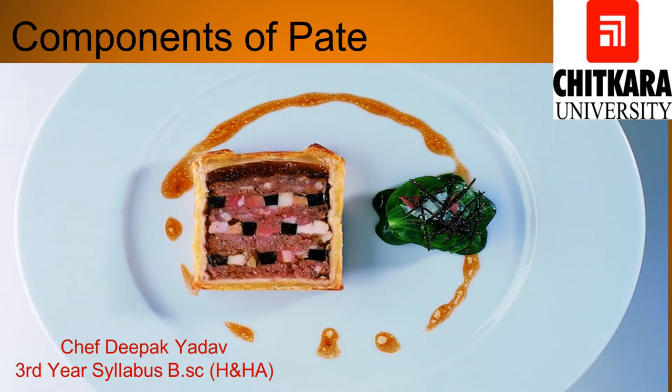A Pate therefore has a few components. The first one is Pastry. This is one of the most essential components of Pate that separates it from a Terrine. In the next episode, I will explain what a Terrine is. The second component is Stock — it is a reduced, flavored, concentrated form of meat that is used as force meat for Pate. The leftover trimmings of the meat can be combined and made into a reduced stock.